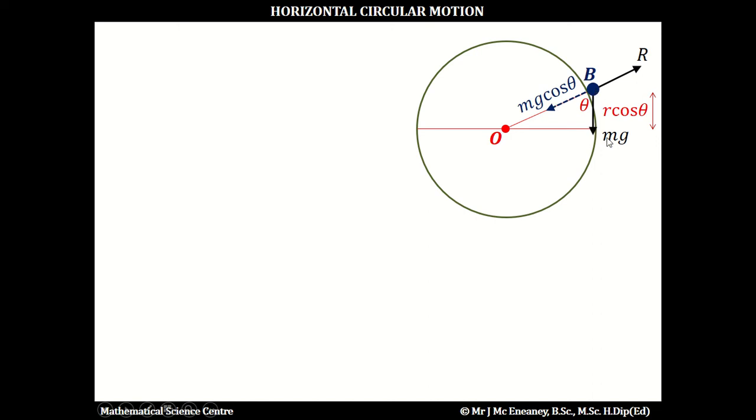If this weight is Mg, this component would be Mg cos theta. The resulting force towards the center is Mg cos theta minus R. Now Fc is Mv squared over R, so Mg cos theta minus R equals Mv squared over R, and we can label that as equation number 2.